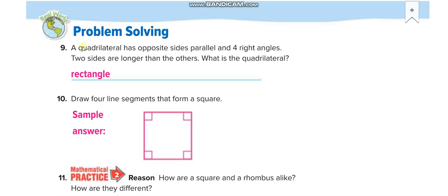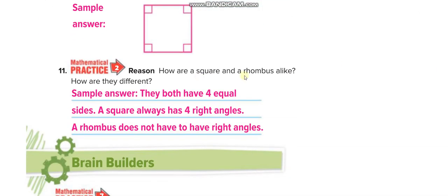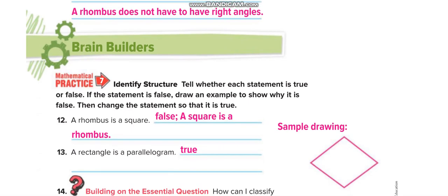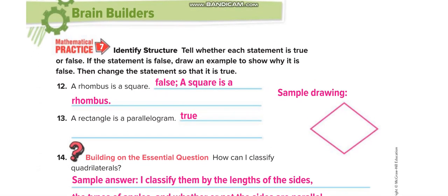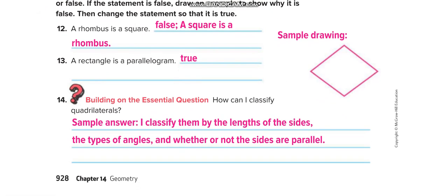A quadrilateral with opposite sides parallel and four right angles is of course a rectangle. You can draw line segments to form a square here. How are a square and a rhombus alike? As I mentioned on the second page of the lesson, both have four equal sides. I hope you understand the lesson — don't forget to like this video and subscribe to my channel.